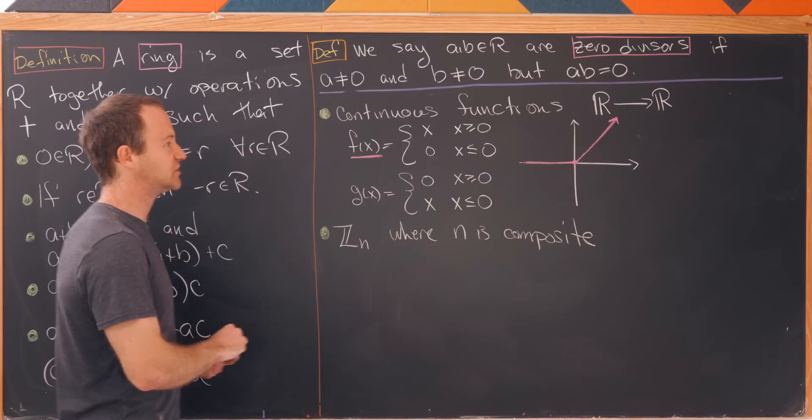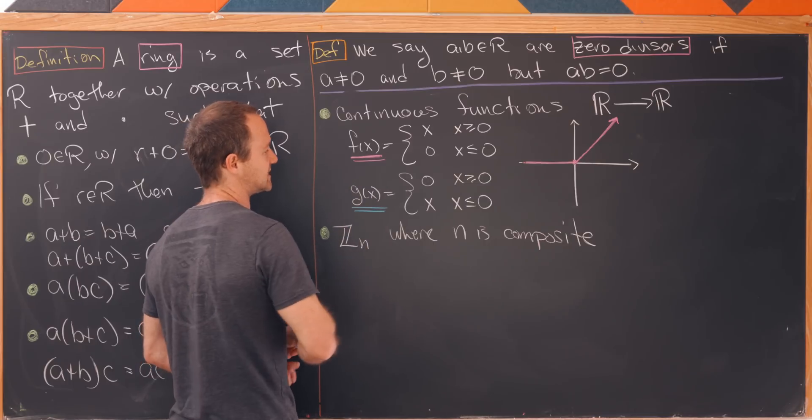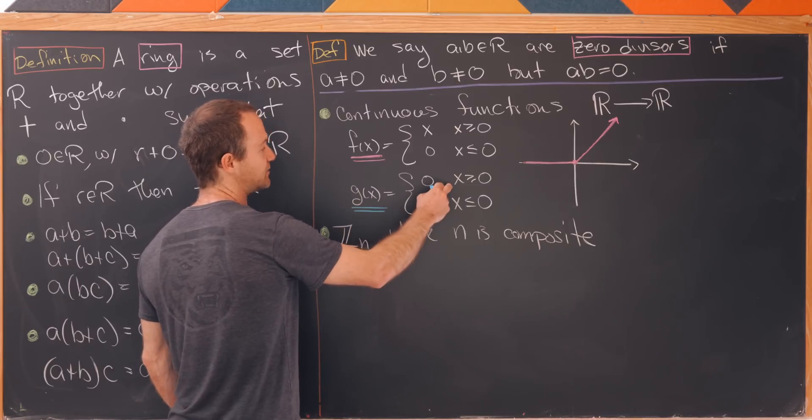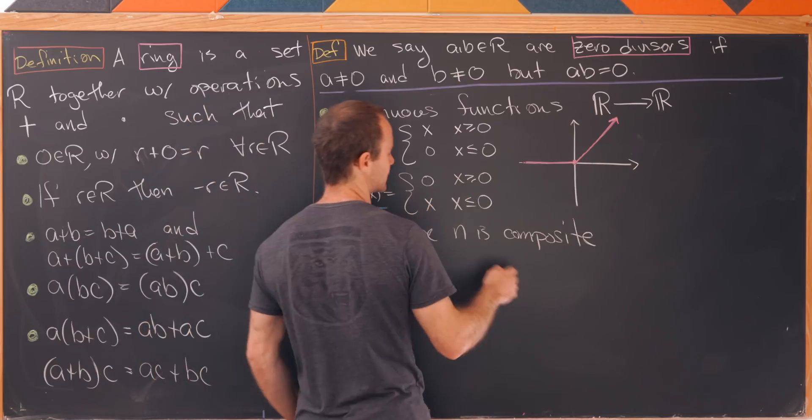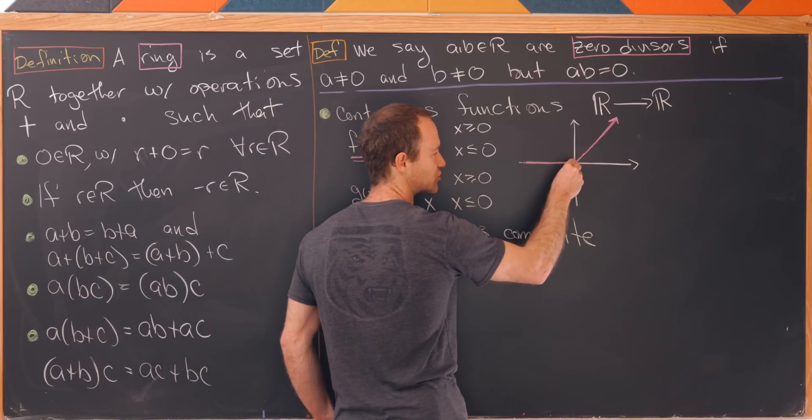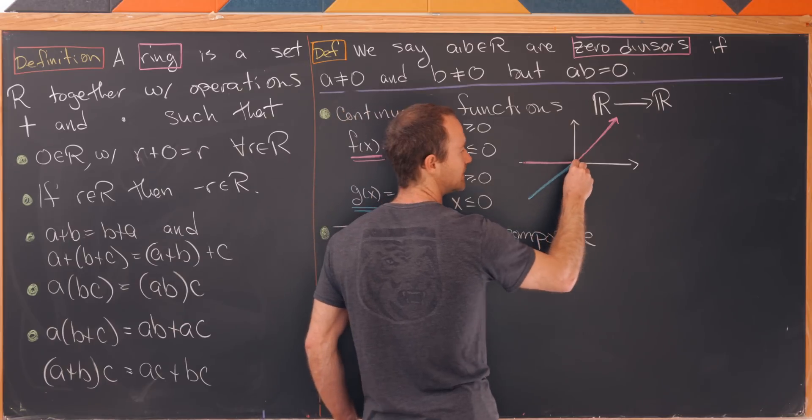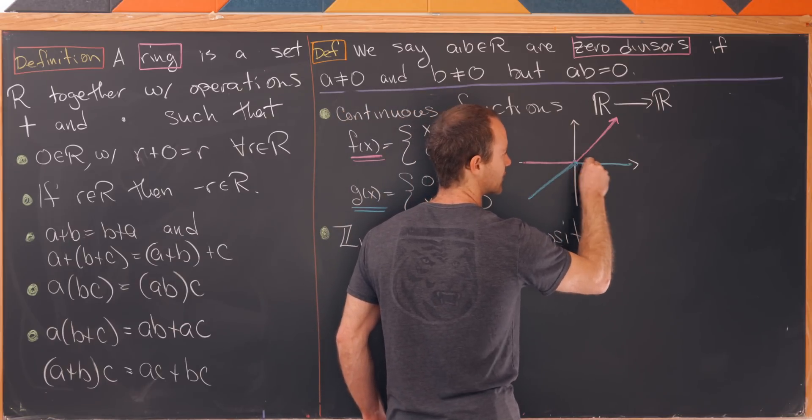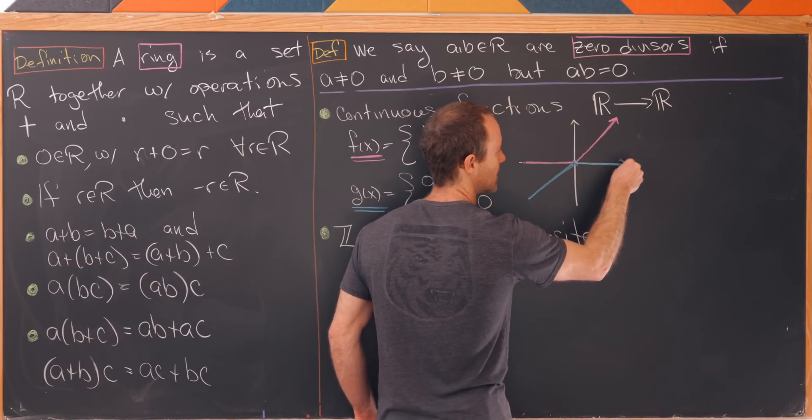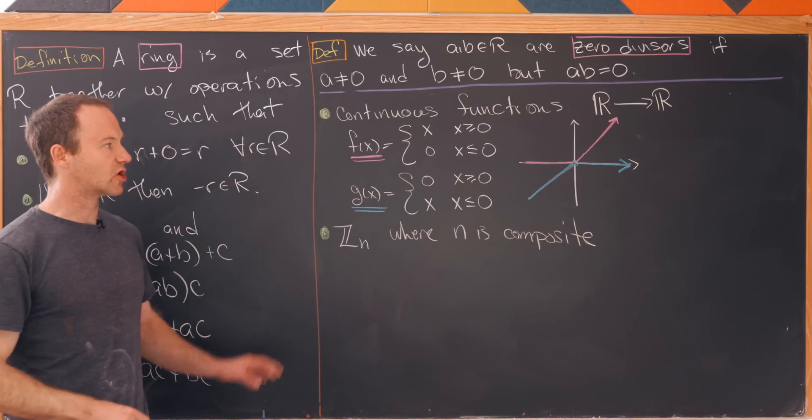Now let's graph g(x) maybe in this blue color. Okay so let's see when x is bigger than or equal to zero it's equal to zero. When it's less than or equal to zero it's equal to x so maybe that's best drawn like this. So this would be the less than or equal to zero portion and this would be the greater than or equal to zero portion.